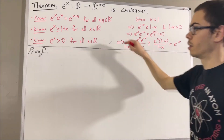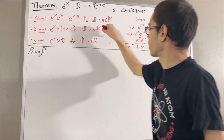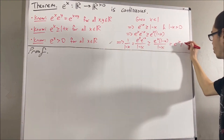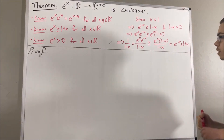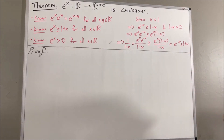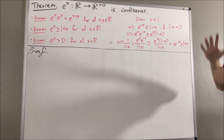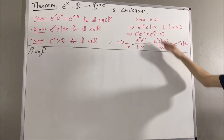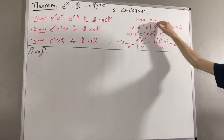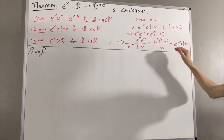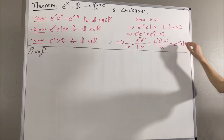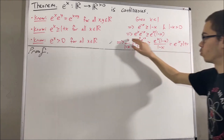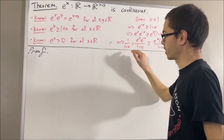But again, by this fact, we know that e to the x is also greater than or equal to 1 plus x. So, what we have shown here is: given any real number x less than 1, we have that e to the x lies between 1 plus x and 1 over 1 minus x.